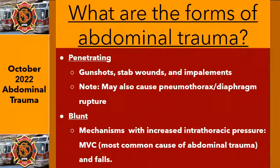Moving on to the forms of abdominal trauma. Just like thoracic trauma, we have penetrating and blunt. Penetrating includes stab wounds, impalements, and gunshots. It also may cause pneumothorax or diaphragmatic rupture — with enough force it can blow the diaphragm out. So if the patient says they can't breathe and you're hearing gut sounds in the lung area, you may have a perforated diaphragm with viscera inside the thoracic cavity. Blunt trauma is when you have mechanisms with increased endothoracic pressure. Motor vehicle incidents are the most common cause of abdominal trauma, as well as falls.